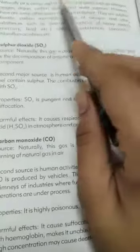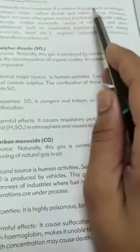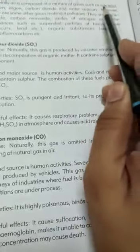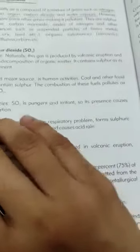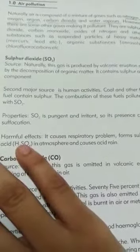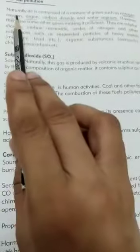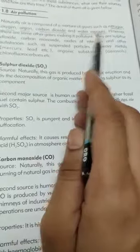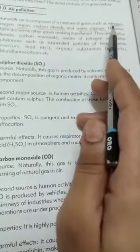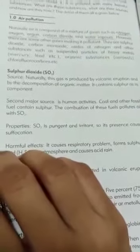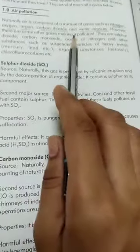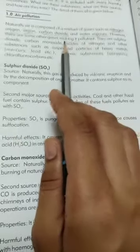Air is a mixture of gases such as nitrogen, oxygen, argon, carbon dioxide, and water vapors. The major component of the air is nitrogen. However, some other gases are also present in the air — lekin woh hamaari air ko pollute kar rahi hoti hain.